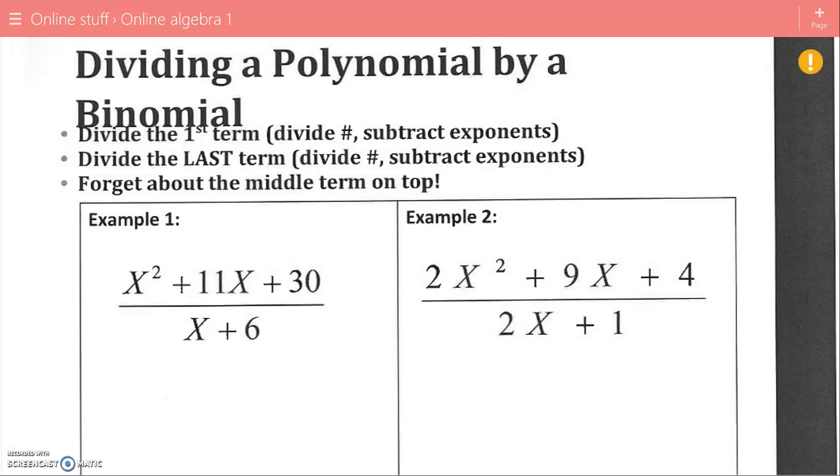Tomorrow we will start new material. It works with polynomials, but in a different standard. Today we are finishing up standard A.2B. Tomorrow we will start A.2C, but you do not need to worry about that right now. What we are going to do is divide polynomials by a binomial, which means we have two terms on the bottom as opposed to yesterday when we only had one. It's a little bit different method. It's sometimes a little bit quicker because you don't have to create all those fractions. But as long as you follow the same steps, it is the same process. You just repeat it each time.